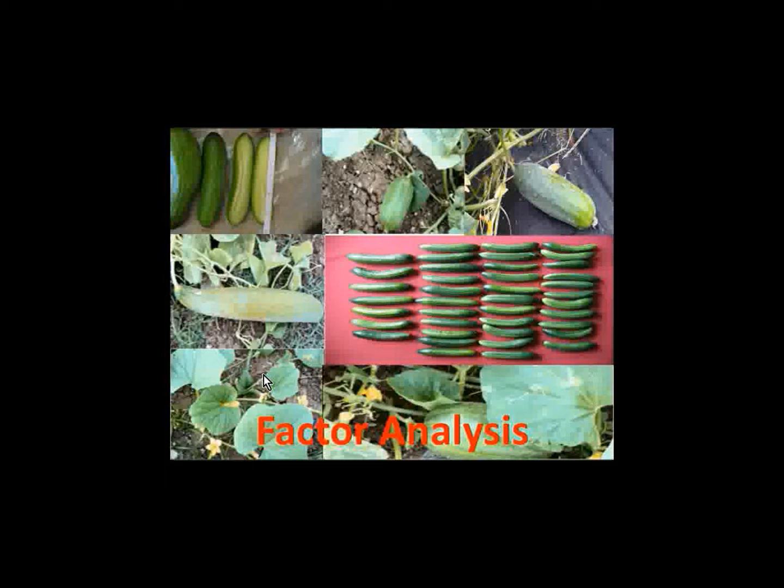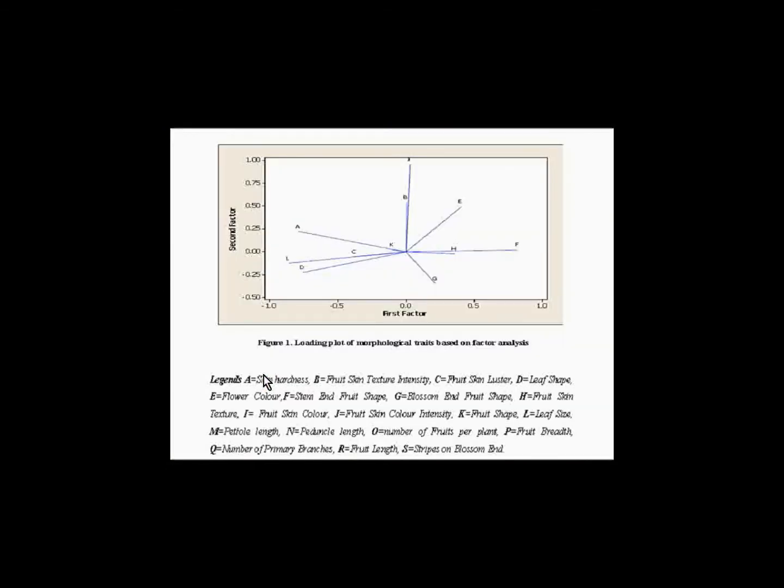The first three factors are contributing to 60.2% of the total variance observed. The first factor had high contributing loadings from stem end fruit shape, blossom end fruit shape, fruit skin texture, and stripes on bottom end, contributing to 27.2% of total variation. The second factor had high contributing loadings from peduncle length, number of fruits per plant, skin hardness, and number of primary branches, contributing to 23.3% of total variation. The third factor had high contributing loadings from flower color, number of primary branches, and fruit shape, contributing to 19.7% of total variation.